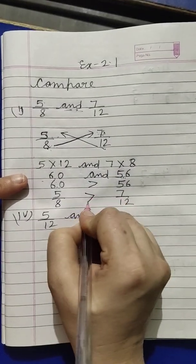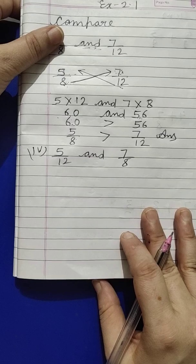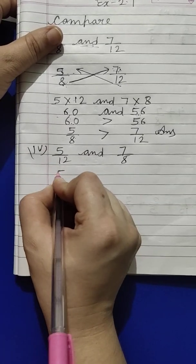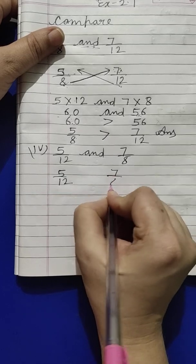This is our homework, first. If you don't understand, you can ask. Now second: 5 upon 12, okay? 7 upon 8. Now next process is we do cross multiplication.